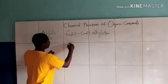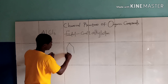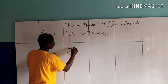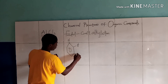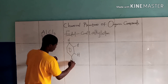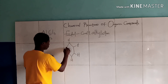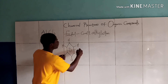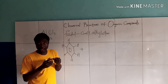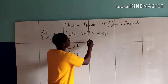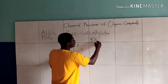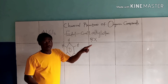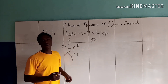Now this is a benzene structure. Benzene reacts with a haloalkane. Haloalkanes have a general formula of R-X, that's an alkyl group and a halogen. That is the haloalkane.